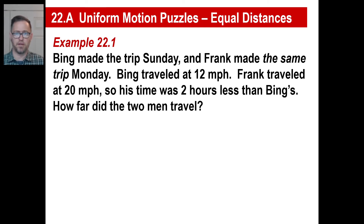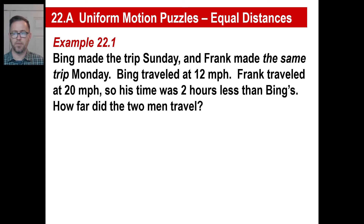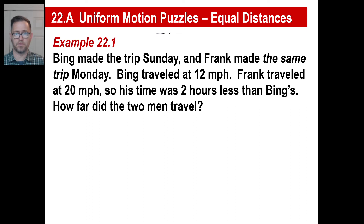Bing made the trip Sunday. Frank made the same trip Monday. Bing traveled 12 miles an hour. Frank, 20 miles an hour. Frank's time was two hours less than Bing's. How far did the two men travel? Now, those two men traveled the same distance. So if you want to visualize this: there's Bing making a trip, there's Frank making the same trip. So their distances are equal.